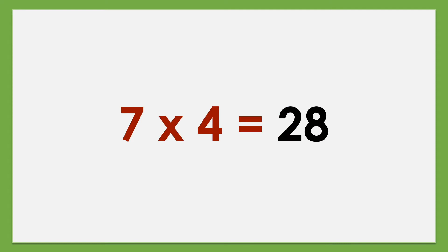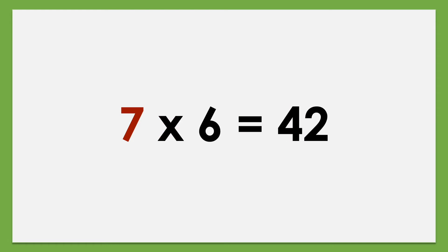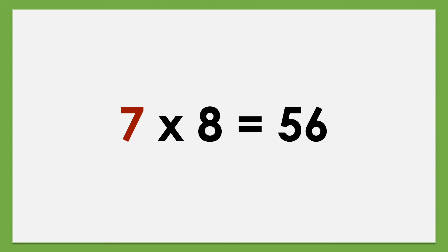7 times 4 equals 28, 7 times 5 equals 35, 7 times 6 equals 42, 7 times 7 equals 49, 7 times 8 equals 56.